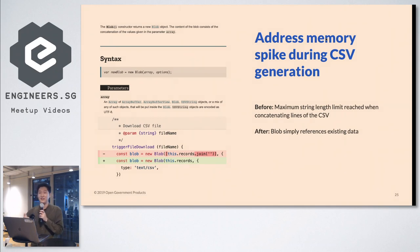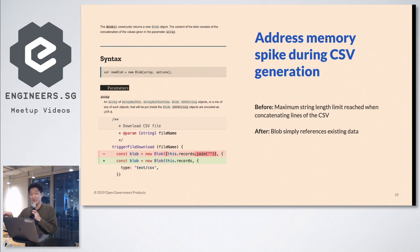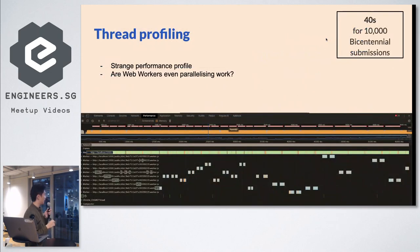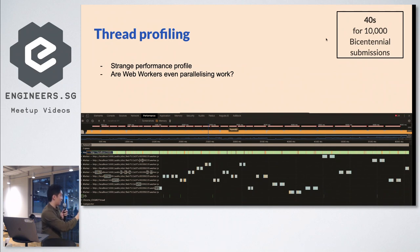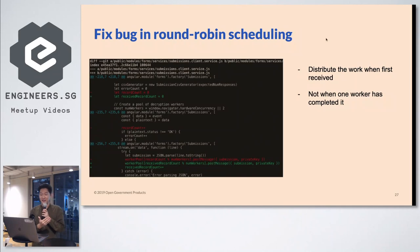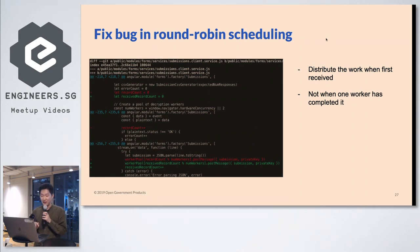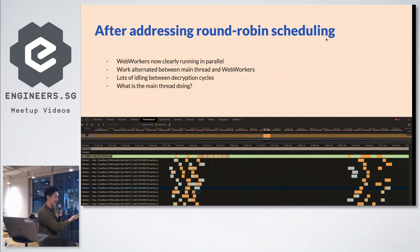Before, we would have crashes when we hit the string limit trying to concatenate lines of the CSV. But looking at the Blob constructor, you can simply create a Blob, pass it an array, and have the Blob reference existing data — so you don't have to join all the records of your CSV. When we looked at the thread profiling, we saw that the web workers were doing work but with large gaps in between. We realized there was a bug in the round-robin scheduling — we were not distributing work when first received, instead waiting for a worker to complete before incrementing a counter. Once we fixed this, the profiling showed that web workers were actually doing work in parallel.